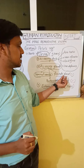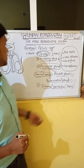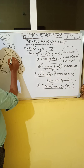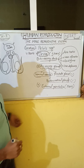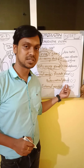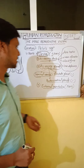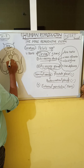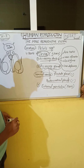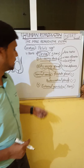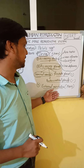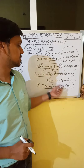The prostate gland is present in the posterior part of the urethra. The bulbourethral glands are present on two sides of the urethra, making one pair. The external genitalia in the case of males is called the penis.